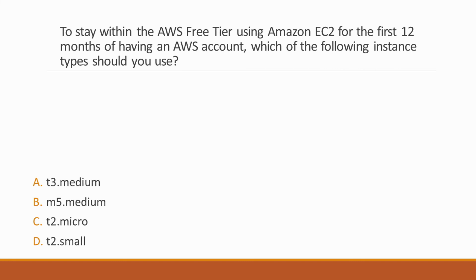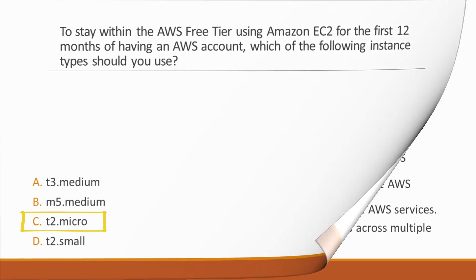Next question: To stay within the AWS free tier using Amazon EC2 for the first 12 months, which instance type should you use? Options: A. T3.medium, B. M5.medium, C. T2.micro, D. T2.small. Correct answer is option C, T2.micro, because one of the EC2 requirements for staying within the AWS free tier is using EC2 micro instances only. Only T2.micro is eligible for free tier usage.